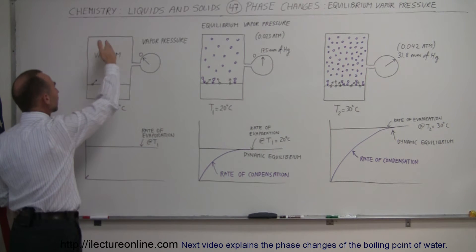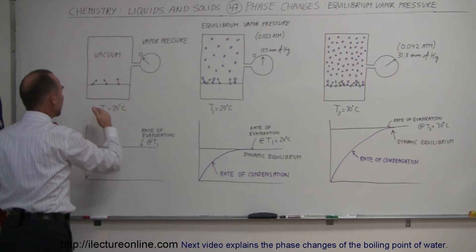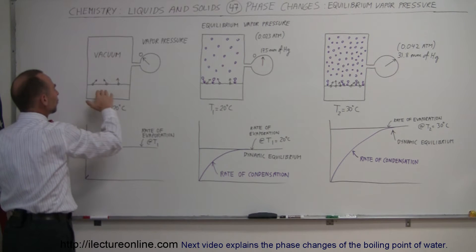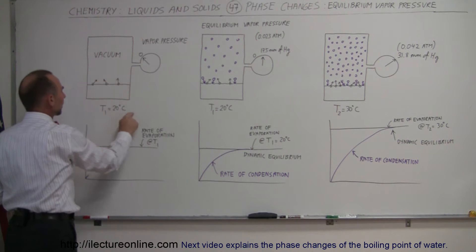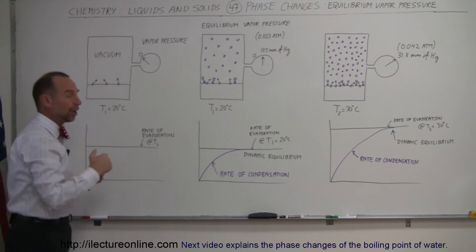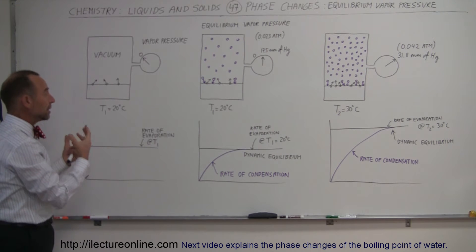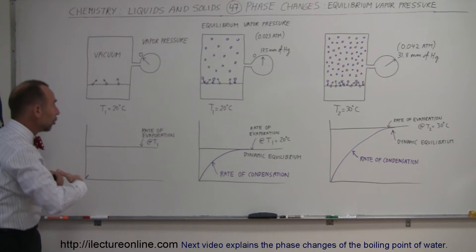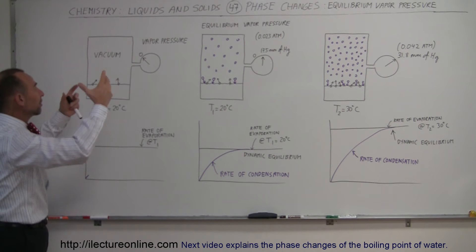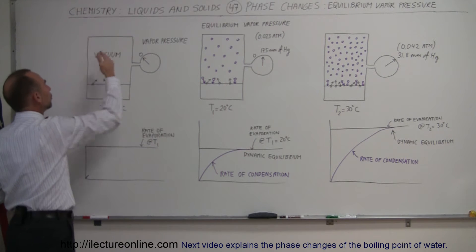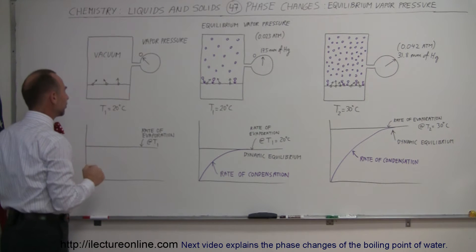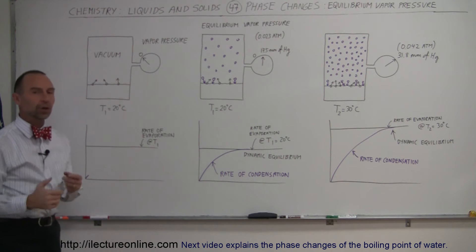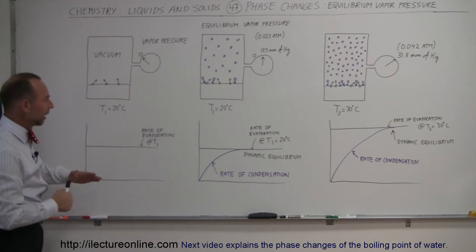So initially, when there's nothing in there — just a vacuum — you simply have what we call an evaporation rate, a certain rate of evaporation depending upon the temperature. The higher the temperature, the higher the kinetic energy of the water molecules, the more molecules per unit time will go into the vapor state. So we have what we call a rate of evaporation, which is dependent on the temperature.